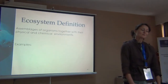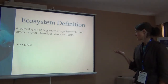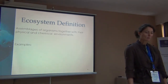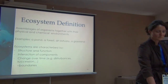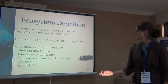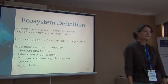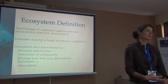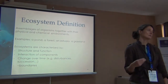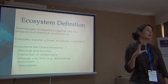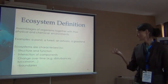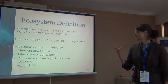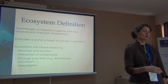As you probably know, an ecosystem is an assemblage of organisms together with their physical and chemical environments. Examples of ecosystems include a pond, a forest, an estuary, and a grassland — all of these have abiotic components like temperature, wind characteristics, and soil characteristics, and biotic components like decomposers, primary producers, etc. All of those interact at a locale that's more or less bounded, and they have both structure and function.